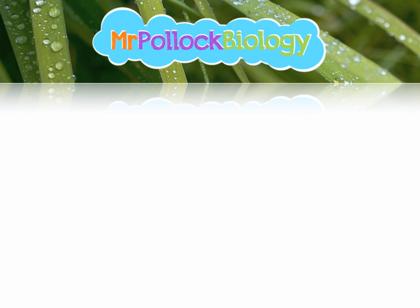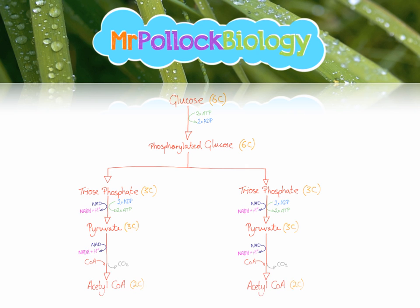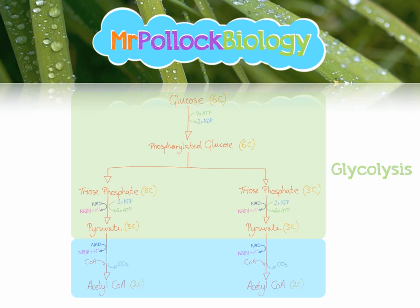Here is the whole of cellular respiration as we know it so far, from glycolysis to the end of the link reaction. Glucose is phosphorylated and splits into triose phosphate, which is then oxidized to pyruvate — that is glycolysis, occurring in the cytoplasm. Then, in the link reaction, pyruvate is oxidized to acetyl-CoA involving the reduction of NAD, the addition of CoA, and decarboxylation — and this occurs in the matrix of the mitochondria.